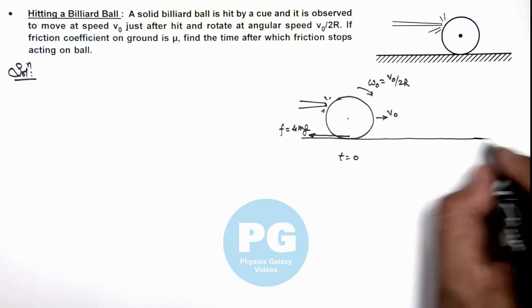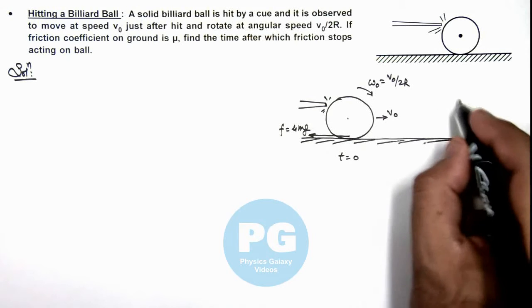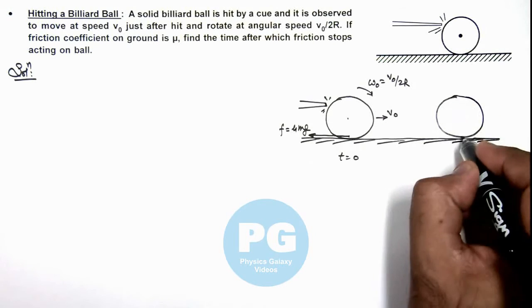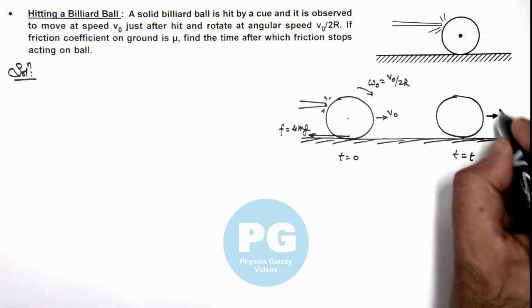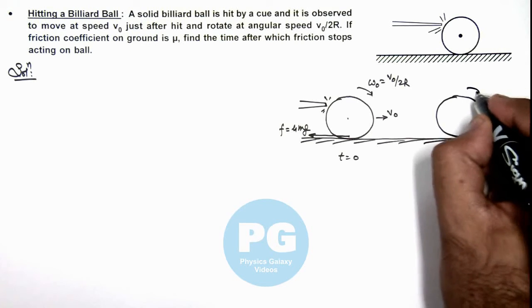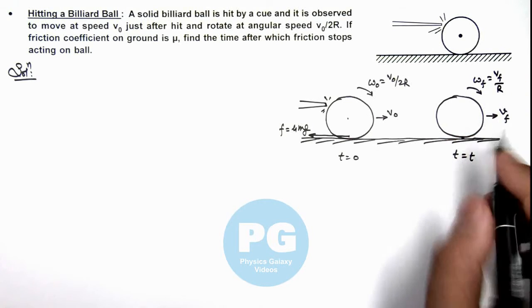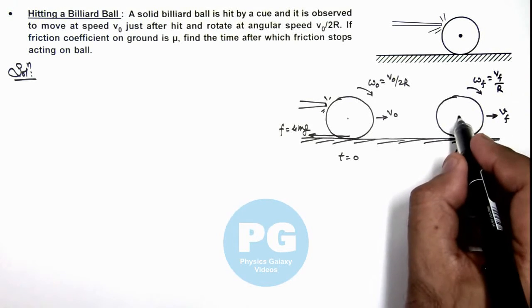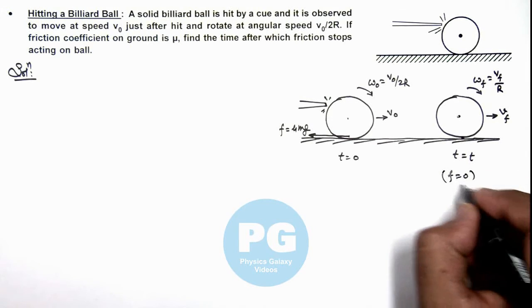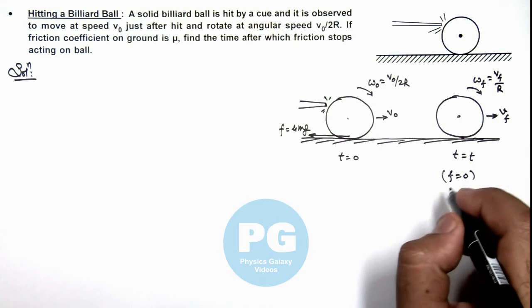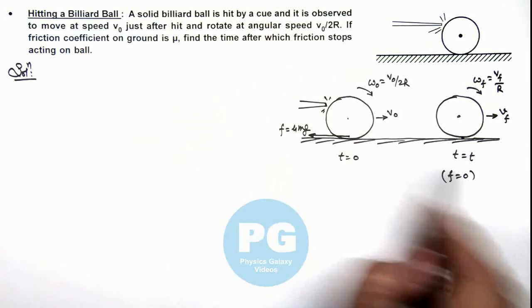After some time on ground, the ball starts pure rolling. Say it happens at time t = T, when the ball's speed is vf and angular speed changes to ωf which is vf/r. As soon as pure rolling starts and as no external force is acting, friction becomes zero in case of pure rolling. So we need to analyze the time after which friction stops acting on ball.